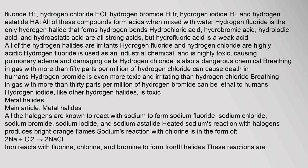All halogens form binary compounds with hydrogen known as the hydrogen halides: hydrogen fluoride (HF), hydrogen chloride (HCl), hydrogen bromide (HBr), hydrogen iodide (HI), and hydrogen astatide (HAt). All of these compounds form acids when mixed with water. Hydrogen fluoride is the only hydrogen halide that forms hydrogen bonds. Hydrochloric acid, hydrobromic acid, hydroiodic acid, and hydroastatic acid are all strong acids, but hydrofluoric acid is a weak acid.